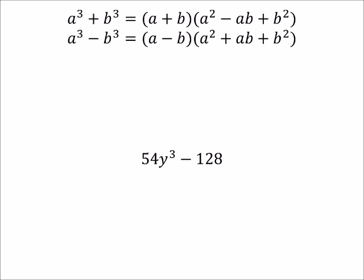So let's take out a 2 from the 54y cubed. And what does that leave us with, 27 I think, y cubed. And this is minus 128 divided by 2, that gives us 64, which is great because both of these are perfect cubes.